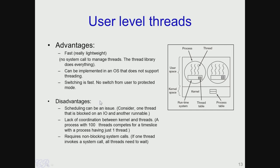The drawbacks are also several. One important drawback is that there is a lack of coordination between the operating system kernel and the threads. This is because the OS is not aware that a process is multi-threaded and also has no indication about how many threads are present in a particular process.